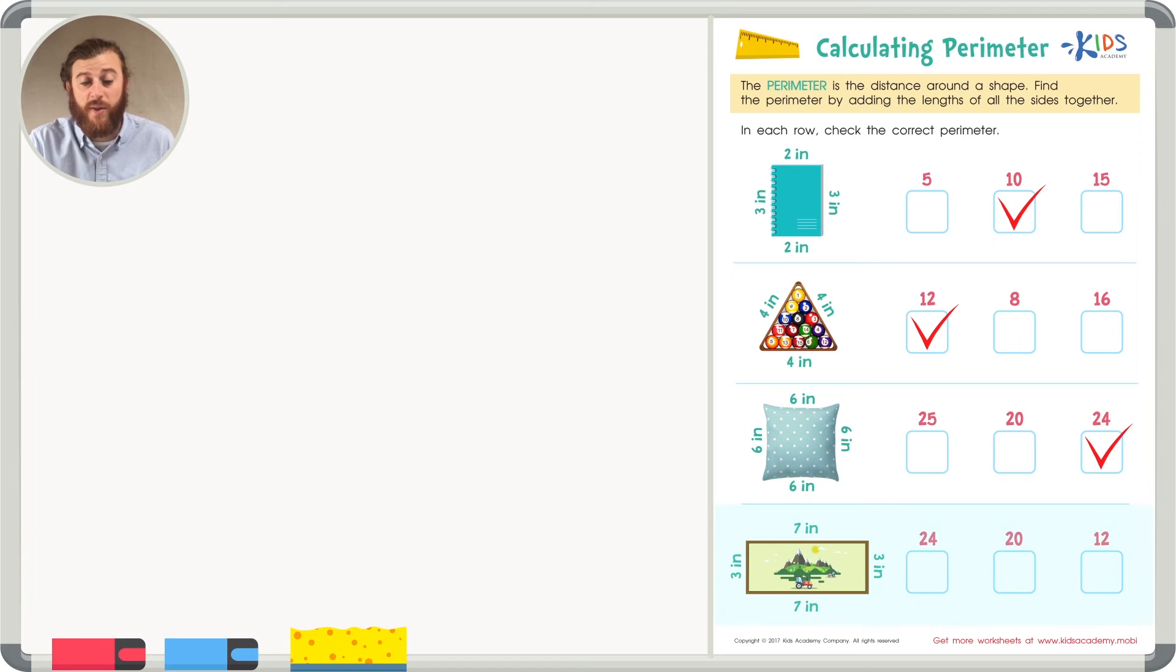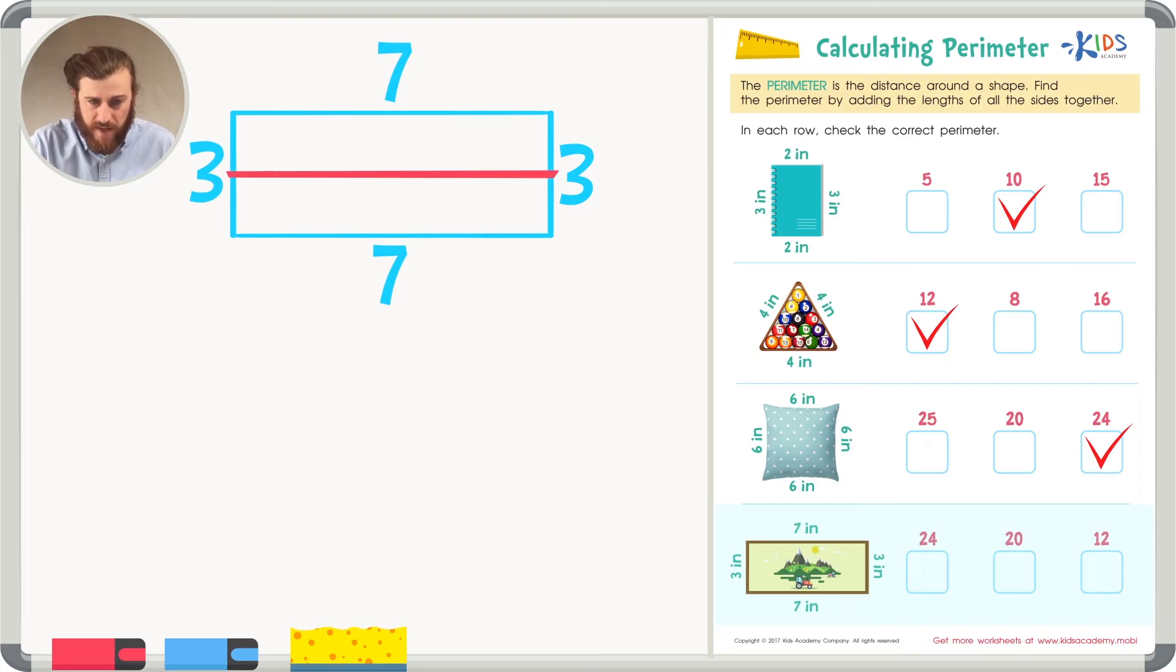In our last example, we have another rectangle. The sides of these rectangles are seven inches and seven inches, and three inches and three inches. Again, let's make two easy problems. We can add the doubles, and then we'll solve. Three plus three equals six. And seven plus seven. Let's count. Seven, eight, nine, ten, eleven, twelve, thirteen, fourteen. It's fourteen.